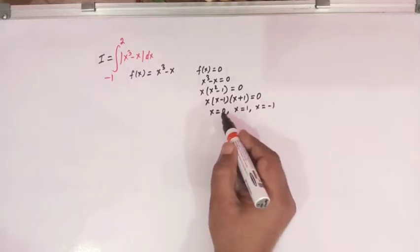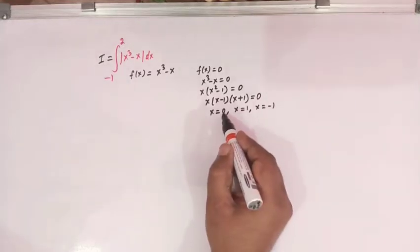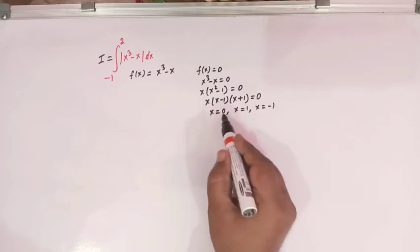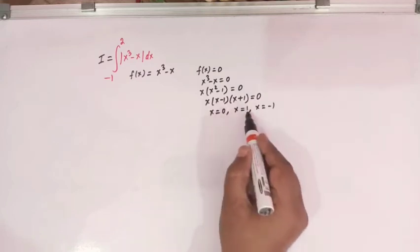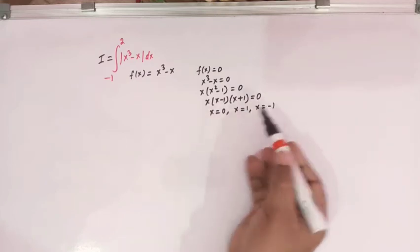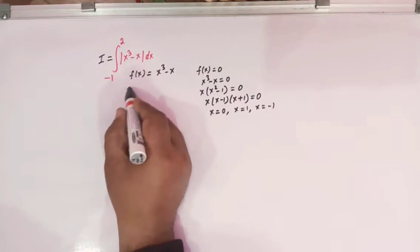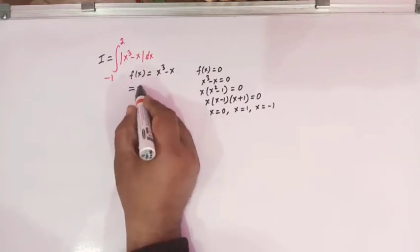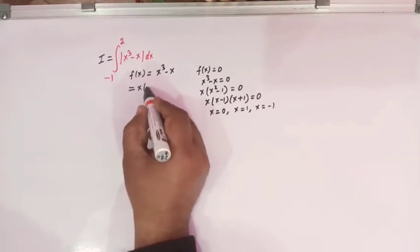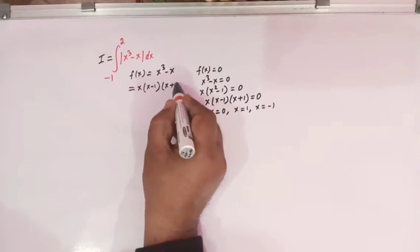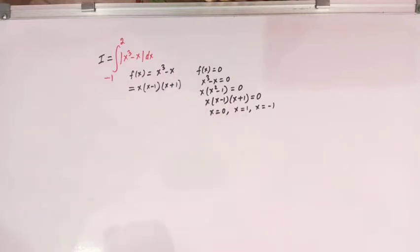So here we have three critical points: 0, 1, and minus 1. Now we can write f of x as x times (x minus 1)(x plus 1).